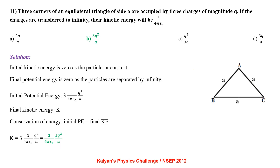Three corners of an equilateral triangle of side A are occupied by 3 charges of magnitude Q. If the charges are transferred to infinity, their kinetic energy will be 1/(4πε₀) times what? Initial KE = 0, final PE = 0. Initial PE = 3 × (1/4πε₀)(Q²/A). Applying conservation of energy, final KE K = (1/4πε₀)(3Q²/A).